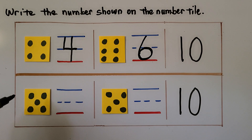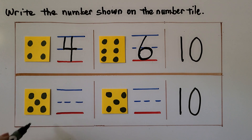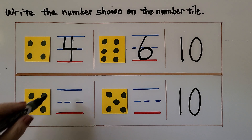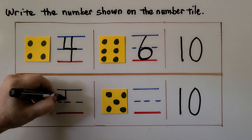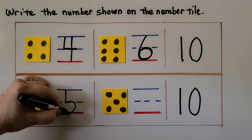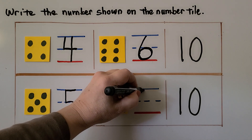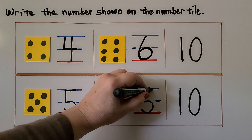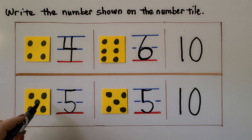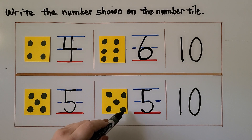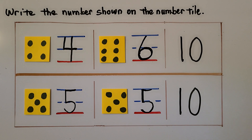We can count the dots on this number tile — one, two, three, four, five. You might be able to look at this and say, I know that's five because I know this pattern makes five. We can write the number five — come down and around and put the top on. This is another five, so five and five is 10. Five and five is a number pair of the same number that shows 10.